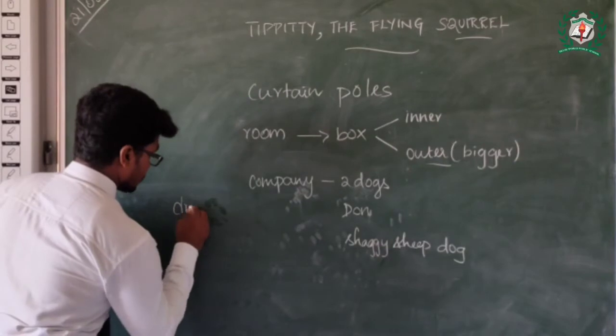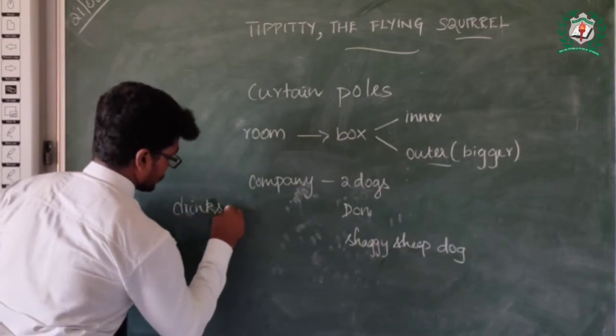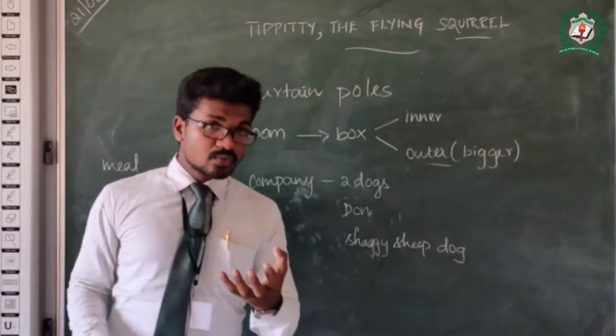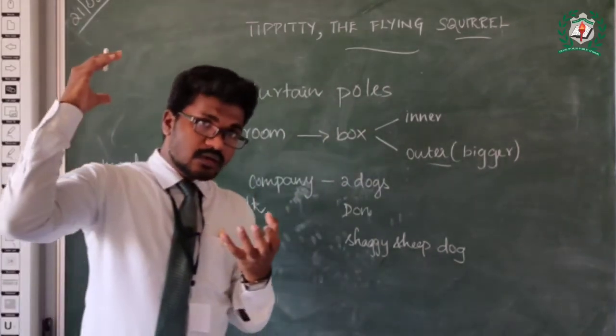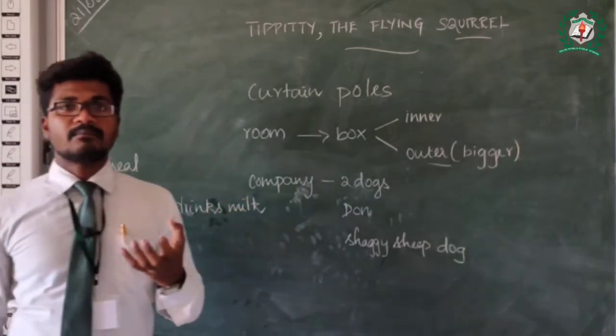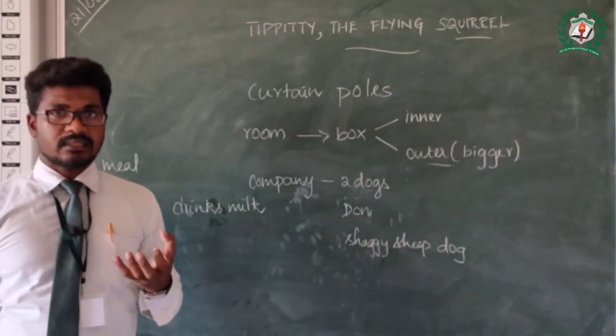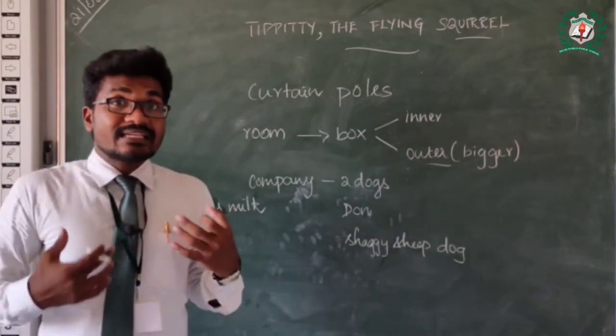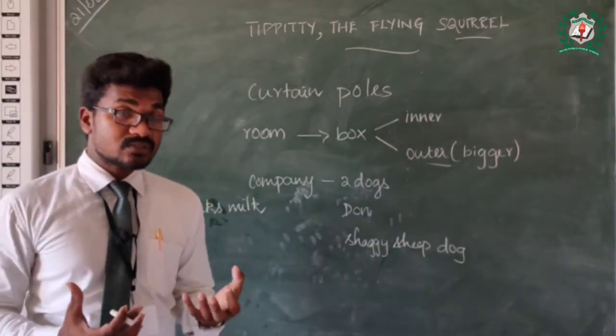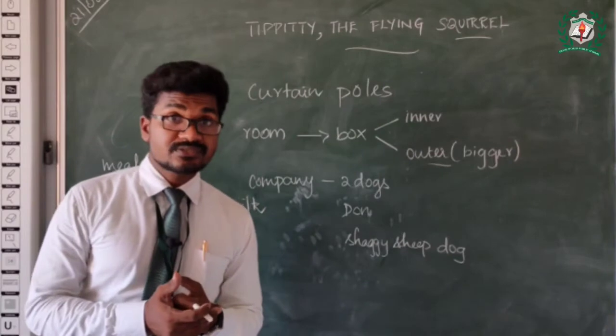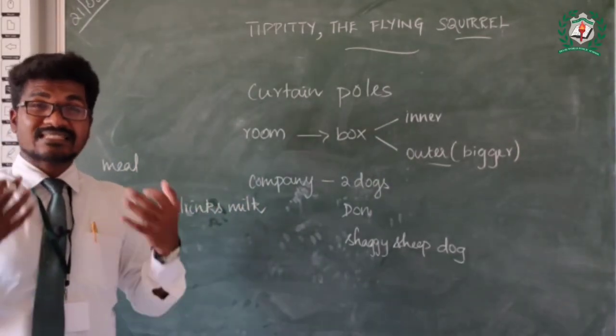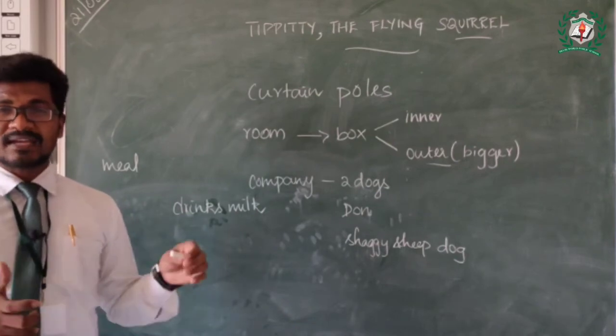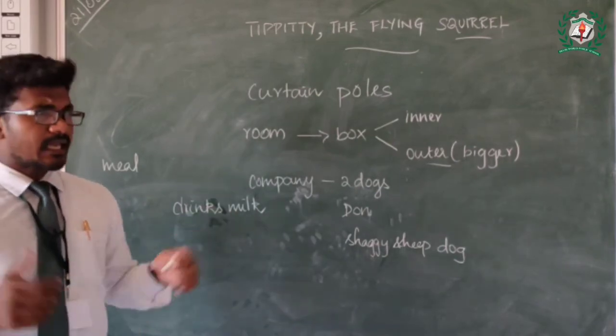And especially when it drinks milk, it used to insert all its mouth and nose together inside the milk. It cannot lick and drink. It does not have the patience to lick and drink. So sometimes it gets sneeze and cluttered. So this is one of the bad habits she has.